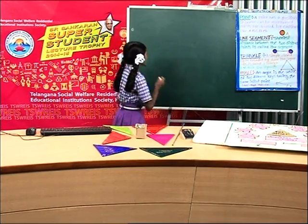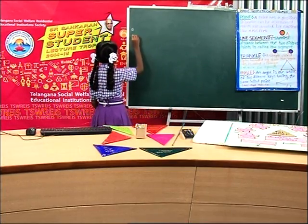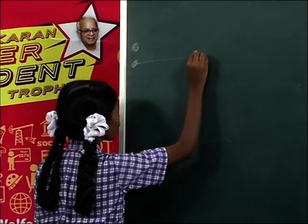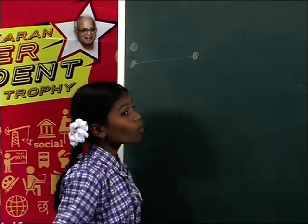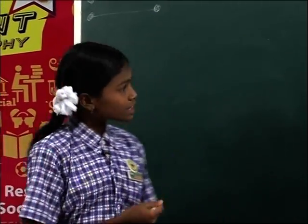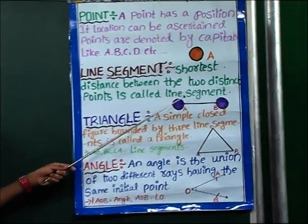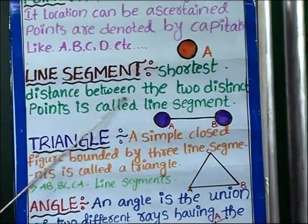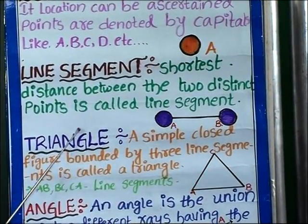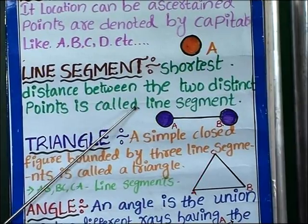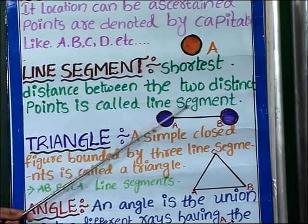And now, what is this? This is a line segment. Line segment means the shortest distance between two distinct points is called a line segment.